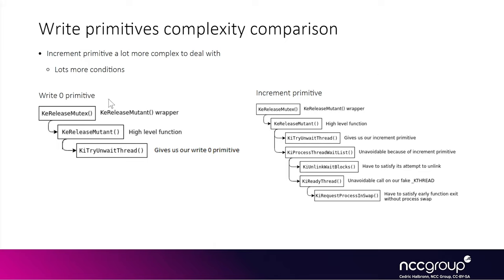The increment primitive is a lot more complex than the write0 primitive. With the write0 primitive, all we need is to reach the ki_try_unweight_thread function without having to craft any valid kthread. However, with the increment primitive we need to craft a valid — at least semi-valid — kthread structure, set lots of its fields and other structures to avoid our fake thread being scheduled. Additionally, the increment primitive only allows us to increment a value by one, so we need to chain it several times to reach any desired value, making it far more complicated than just writing zero to previous mode — which gives us a full arbitrary read/write primitive into the kernel from userland.